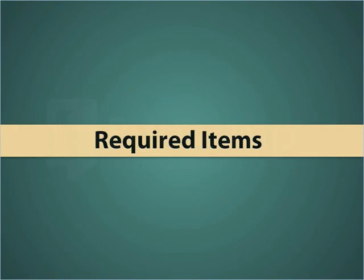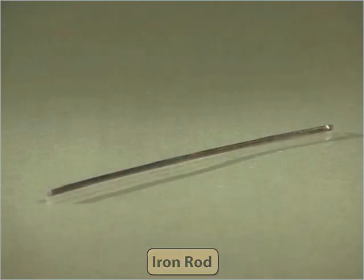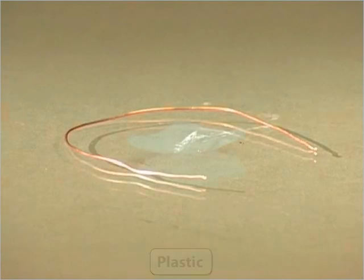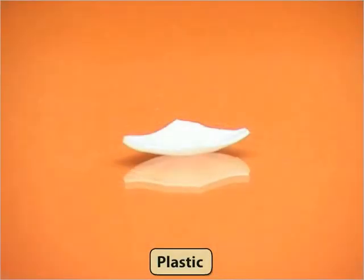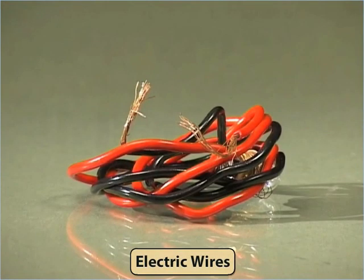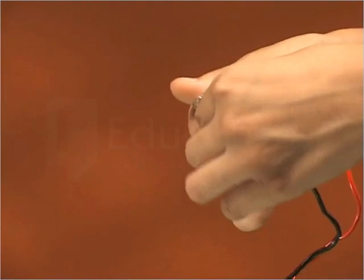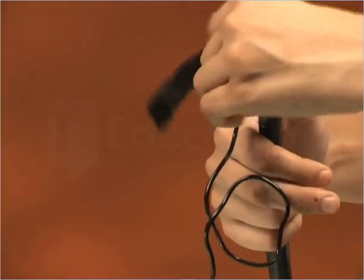For this activity, we need an iron rod, copper wire, a piece of plastic, insulated electric wires, a battery, and a bulb. Make an electric circuit with the help of electric wires, battery, and the bulb.